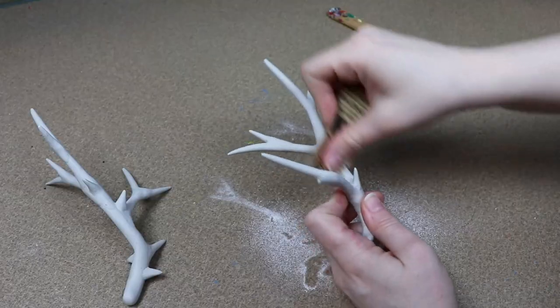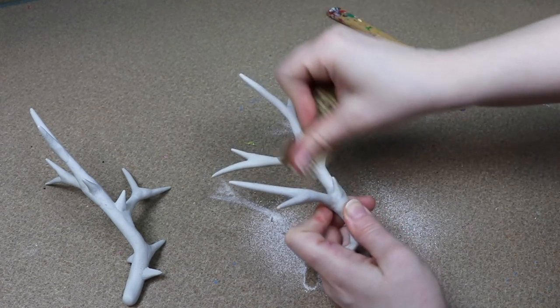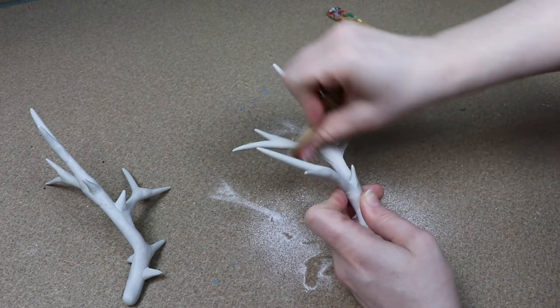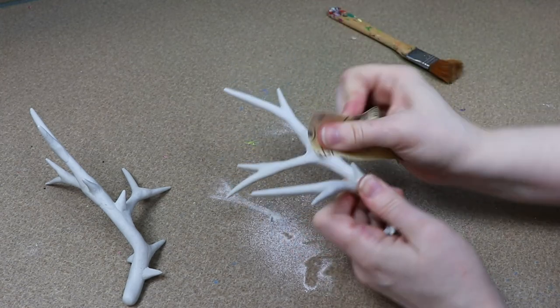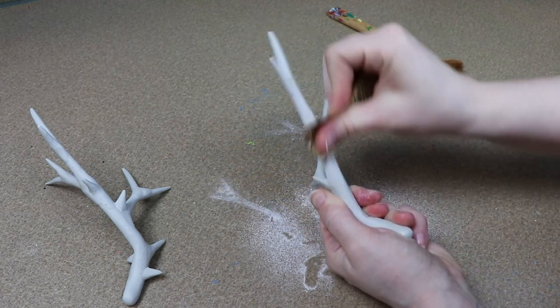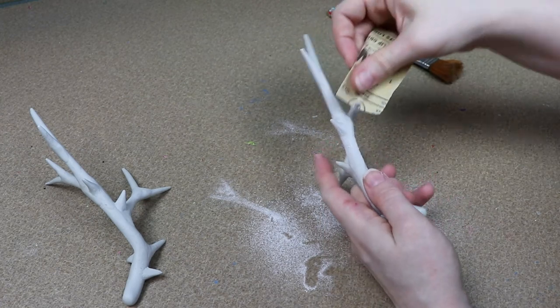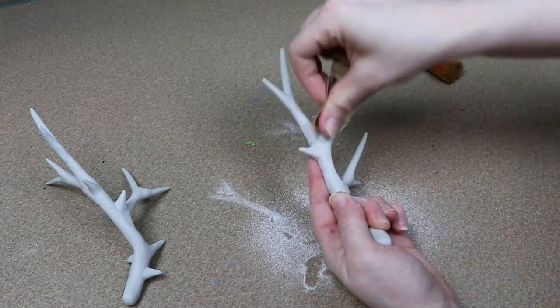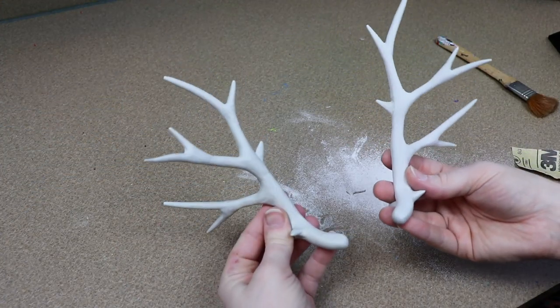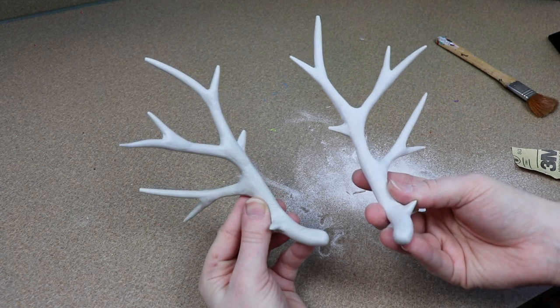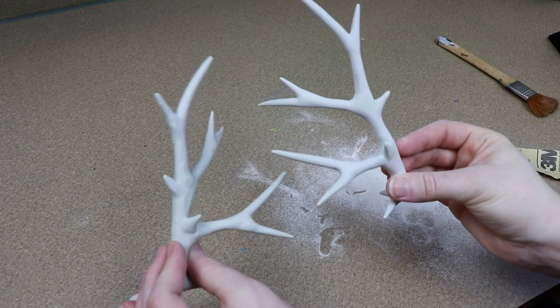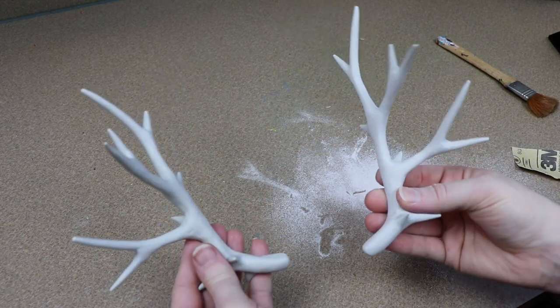So I'm just going to smooth everything down and if you want to at this point, you could also thin some areas out if you feel like the antlers are a little too thick. And like I said, you don't have to do this, but you can notice a pretty good difference between the two antlers after I sanded one, kind of just showing a little bit of a before and after. So I felt like it was really worth it to sand them.